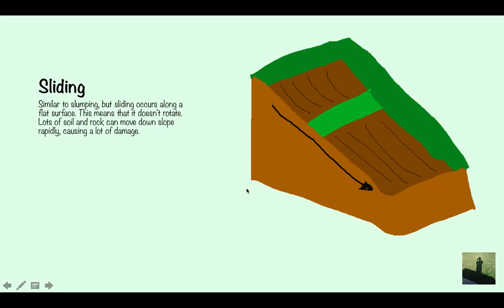Sliding is similar to slumping but occurs along a flat surface. Once again you've got the rainfall which has gone through the permeable rock and it's reached the clay or whatever impermeable surface there is. It's caused the top layer of soil and permeable rock to just slide down the rock face. Lots of soil and rock can move down the slope rapidly in this one so it happens very fast and it can cause a lot of damage especially if there's a town or settlement at the bottom. It means that the rock can come down and cause a lot of damage to the settlement.